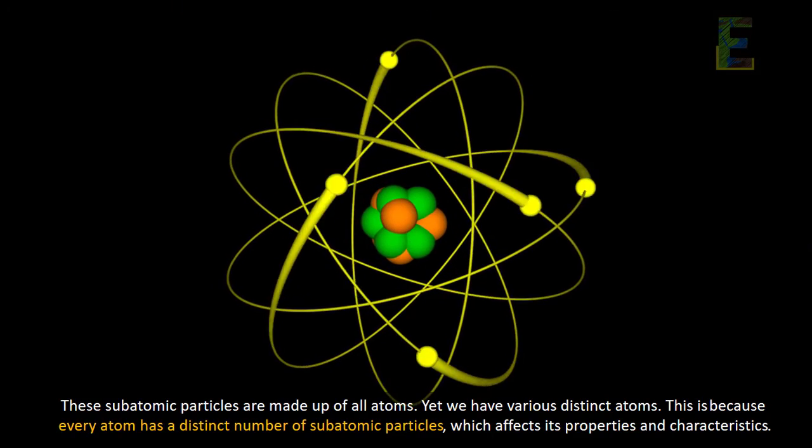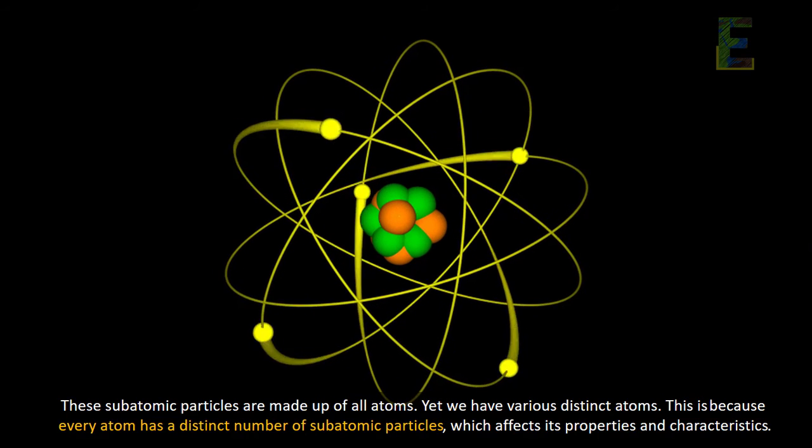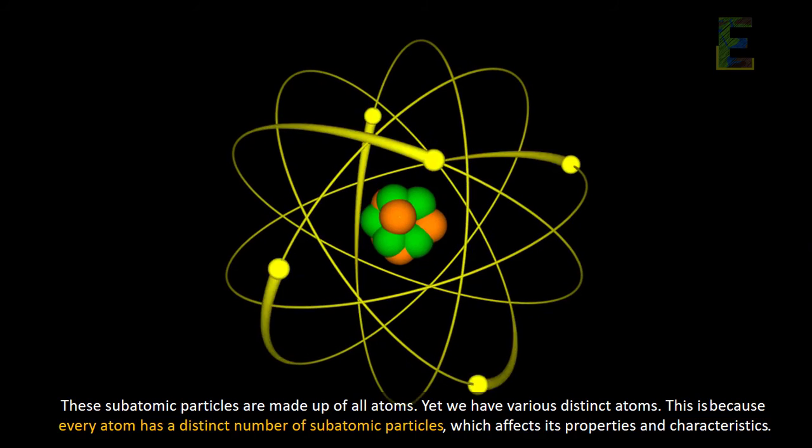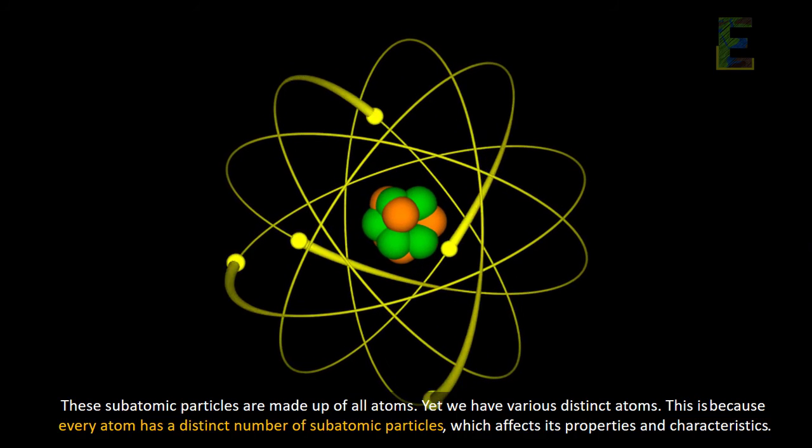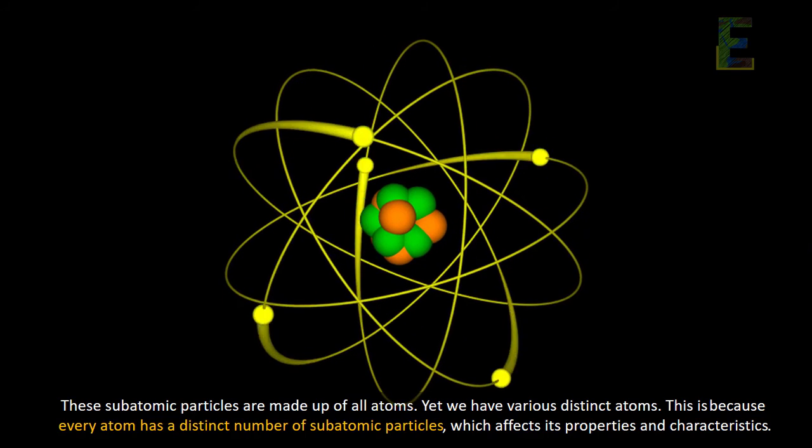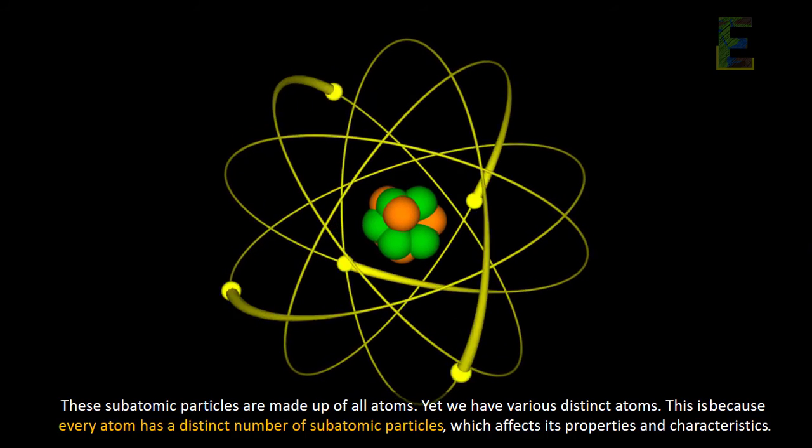These subatomic particles are made up of all atoms, yet we have various distinct atoms. This is because every atom has a distinct number of subatomic particles, which affects its properties and characteristics.